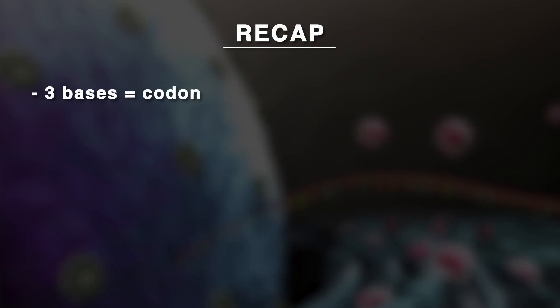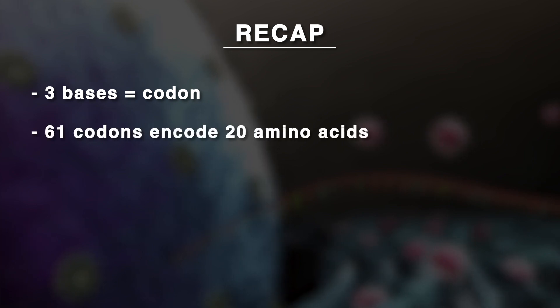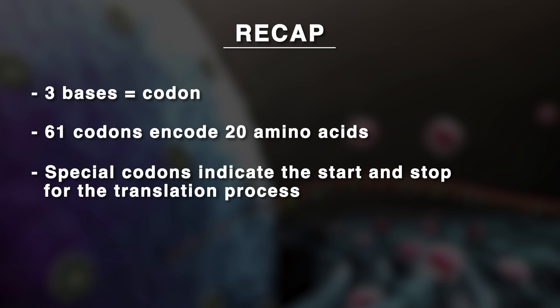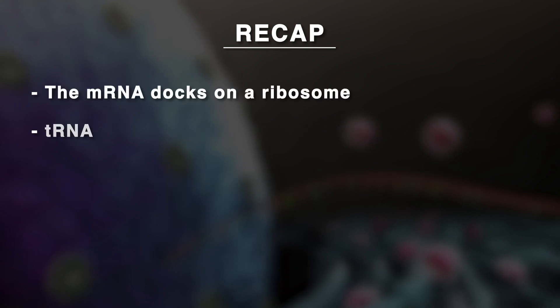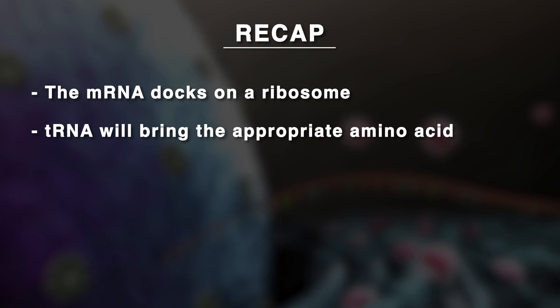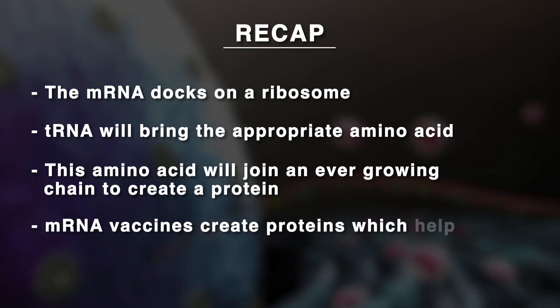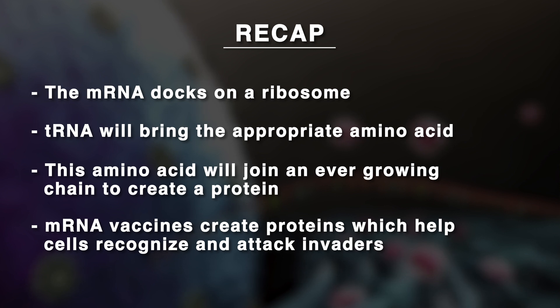Let's do a quick recap. Every three bases on mRNA make a codon. There are 64 codons — 61 encode 20 amino acids which eventually make up a protein. Special codons indicate the start and stop for the translation process. The mRNA docks on the ribosome, where the tRNA will join it, fitting its anticodon with the mRNA codon and bringing the appropriate amino acid. This amino acid joins an ever-growing chain, like adding beads to a necklace, eventually creating a protein. mRNA can be used to make things like vaccines, which provide your body with molecular mugshots to help cells recognize and attack invaders before you ever get sick. And that's how we get proteins from mRNA.